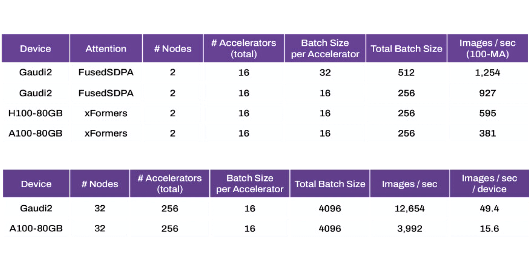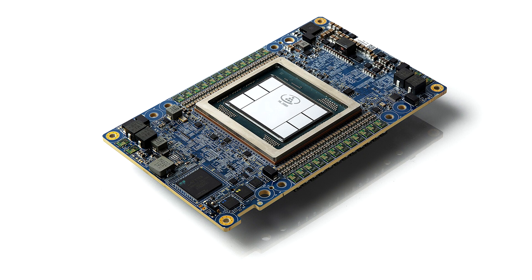Scaling things up a notch to 32 nodes and 256 accelerators, with a batch size of 16 per accelerator and a total batch size of 4096, the Gaudi 2 array is posting 12,654 images per second, or 49.4 images per second per device, compared to 3,992 images per second, or 15.6 images per second per device, for the older generation A100 SXM array.